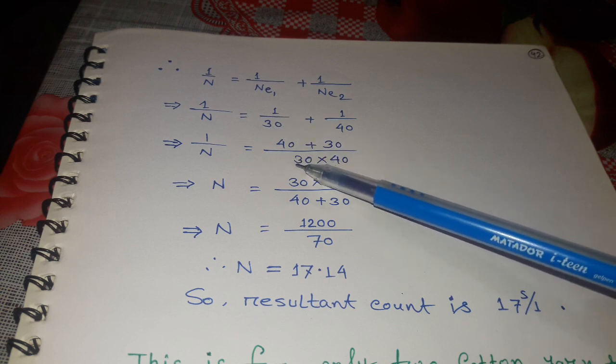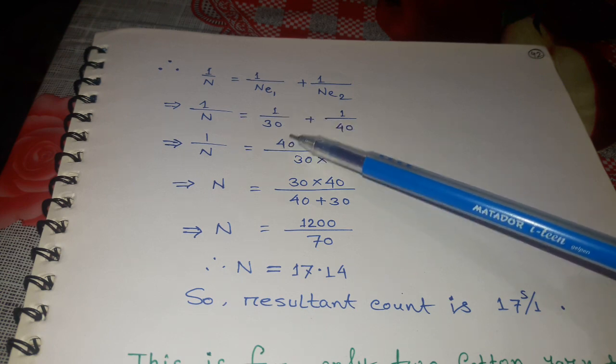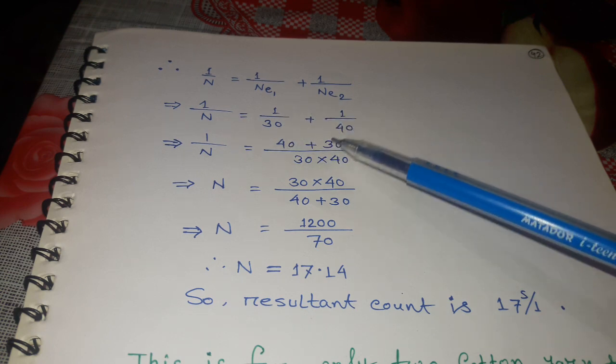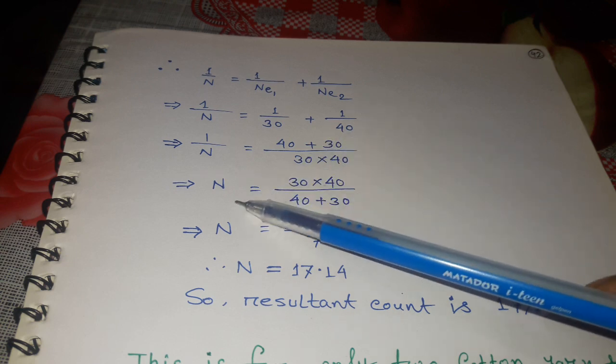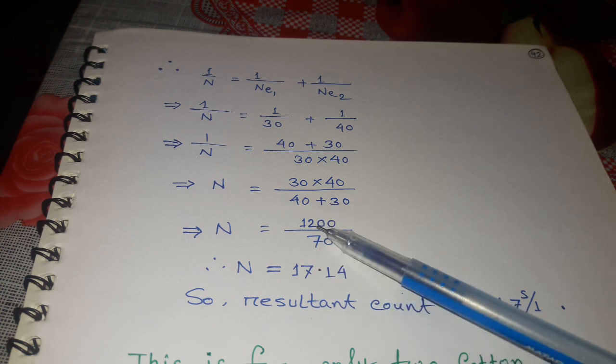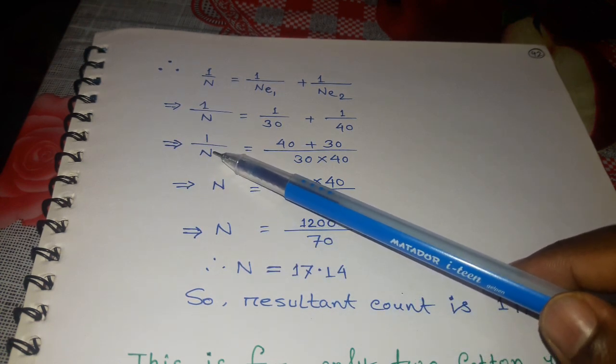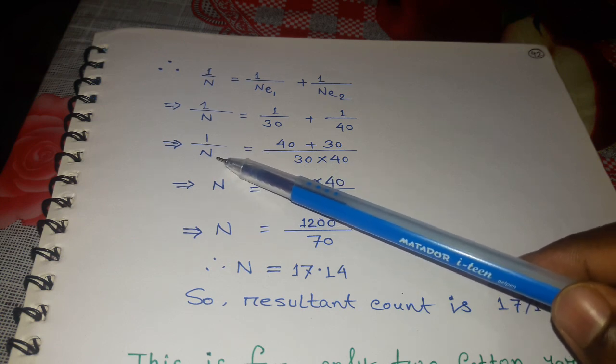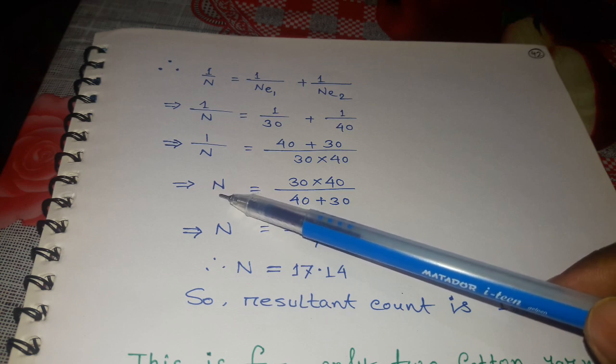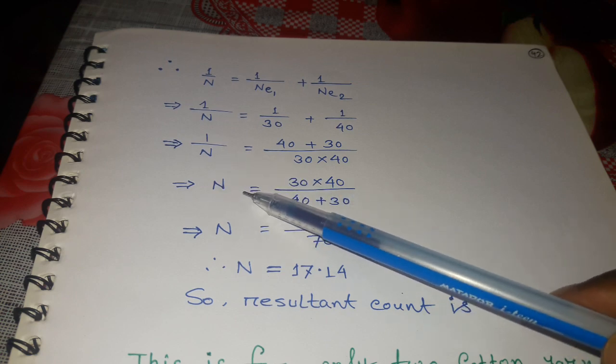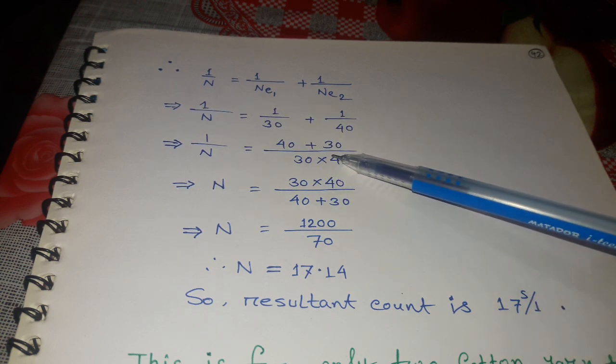We find common denominators and add the fractions. After simplification and taking the reciprocal, we get N = 1200/70.